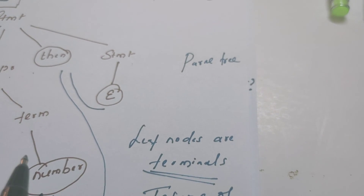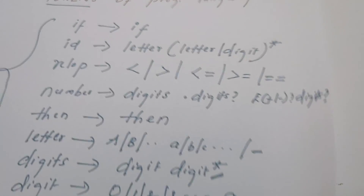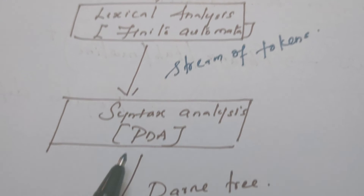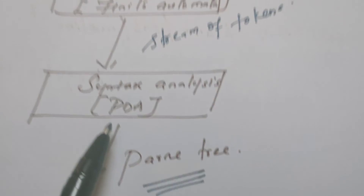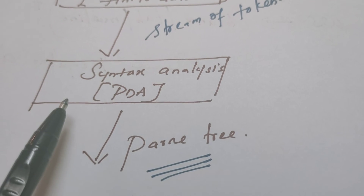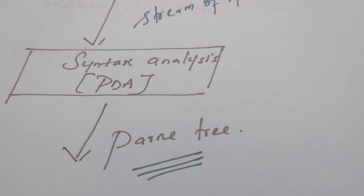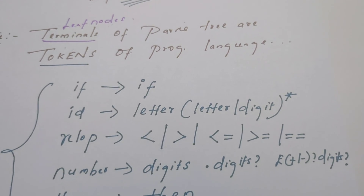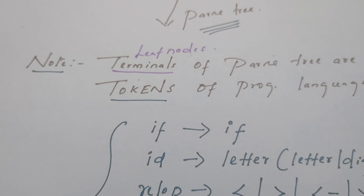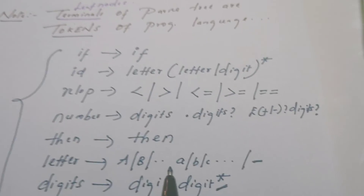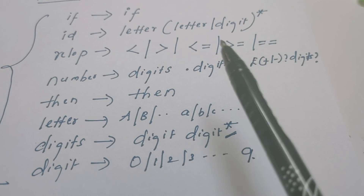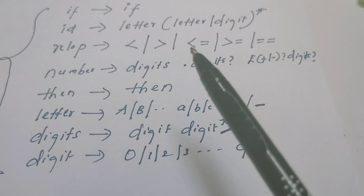To conclude: lexical analysis is nothing but a collection of finite automata which recognizes the tokens. Syntax analyzer is nothing but a pushdown automata which recognizes the syntax of the program. Tokens are defined by regular expressions, and the syntax of the program is defined by context-free grammar. To differentiate regular definition from CFG, check the right-hand side — if star, plus, or question mark operators appear, it is a regular expression. I hope you have understood and got an idea about lexical analysis and syntax analysis.